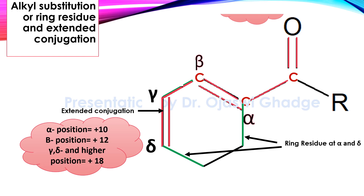Unlike the 1,3-butadiene system where ring residue and alkyl substitutions increase absorbance by 5 units, in alpha-beta unsaturated systems the incremental values are different. If the ring residue or alkyl substitution is present at the alpha position, the absorbance increases by 10 units. If present at the beta position, absorbance increases by 12 units. If present at gamma, delta, or higher positions, the absorbance increases by 18 units.